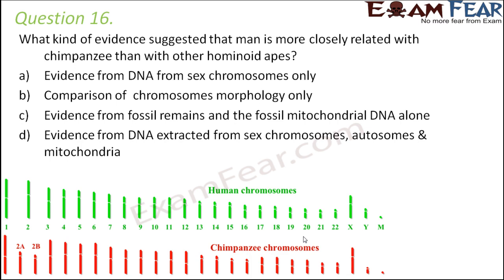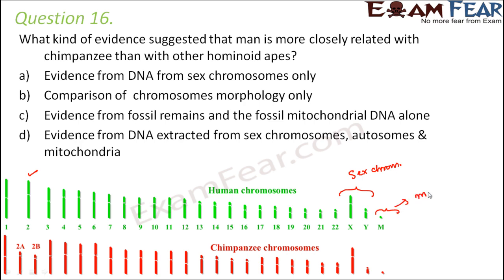When you compare human chromosomes with chimpanzee chromosomes, the pattern is almost similar except for a slight difference in chromosome number two — humans have one chromosome two whereas chimpanzees have two A and two B. We are comparing autosomes — all 22 pairs — as well as sex chromosomes and mitochondrial DNA. The right option is: evidence from DNA extracted from sex chromosomes, autosomes, and mitochondria.